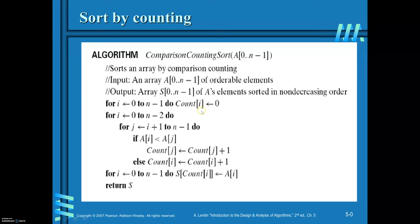First, initialize count equal to 0 for every element of the array. For that, vary the loop from 0 to n minus 1 and set count[i] equal to 0. Now for every element of the array you are required to get the count. Vary the outer loop from 0 to n minus 2, and for each i-th element compare it with all remaining elements by varying j from i plus 1 to n minus 1.